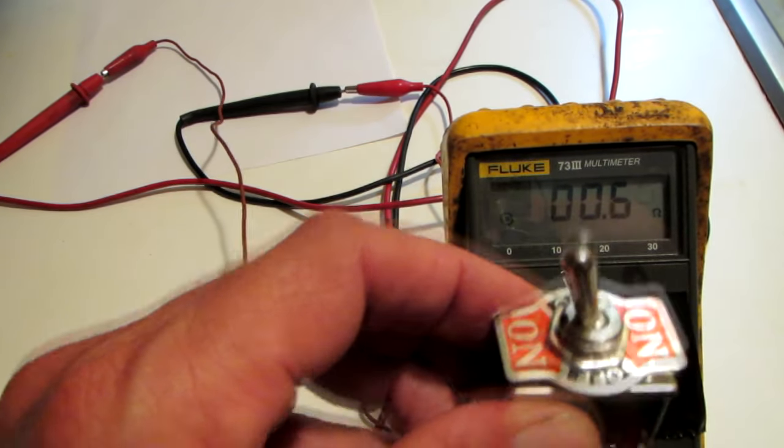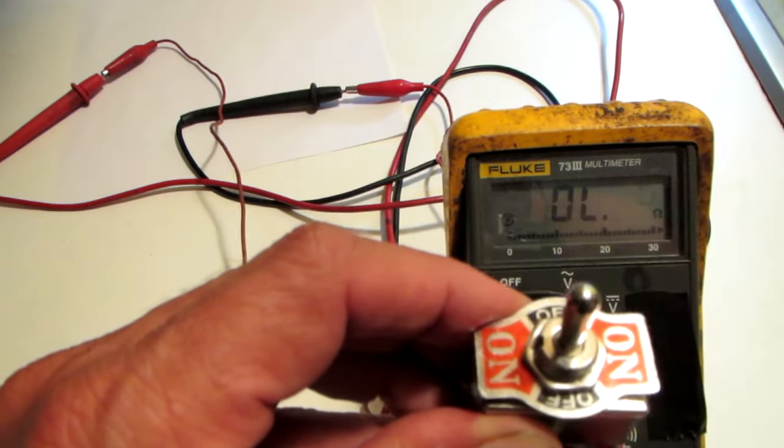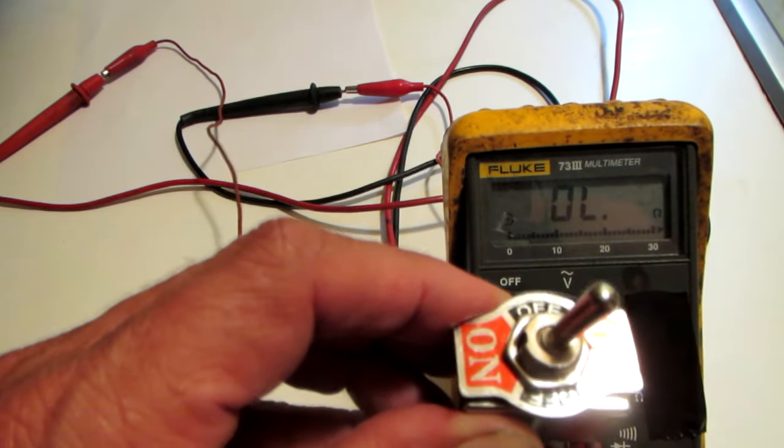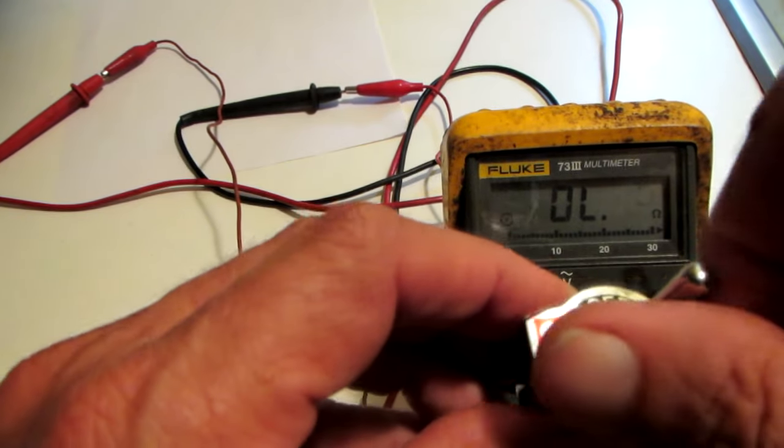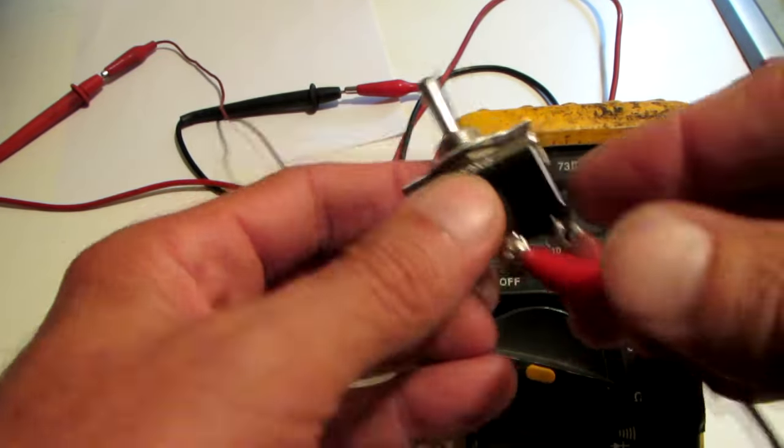The selector is in the off position. We're reading open. Put it to on. Read point four, point five. Back to off. Reads open. And throw it to the other side. Reads open. It's a good switch.